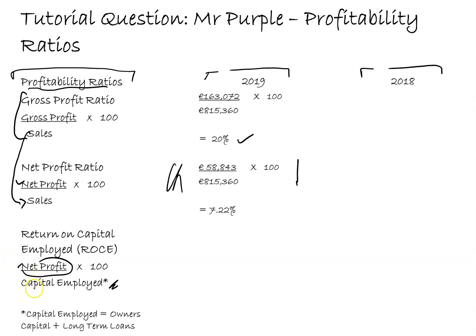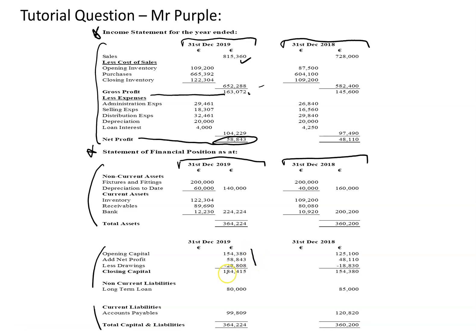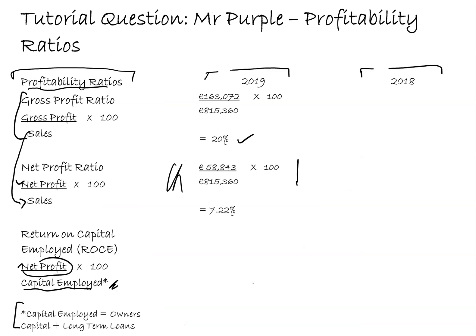For the return on capital employed, I'll use the net profit figure I just calculated and work out the capital employed from the statement of financial position. The capital figure plus the 80,000 long-term loan (non-current liabilities) gives the capital employed. So we have 58,843 net profit divided by 264,415 - which is owner's capital plus long-term loans - multiplied by 100, giving us 22.25%.